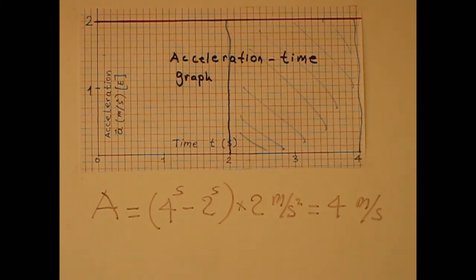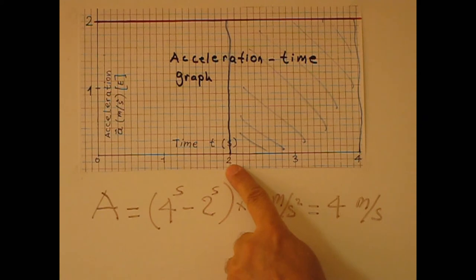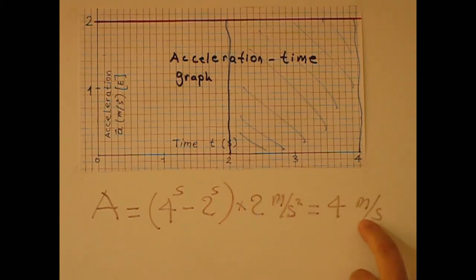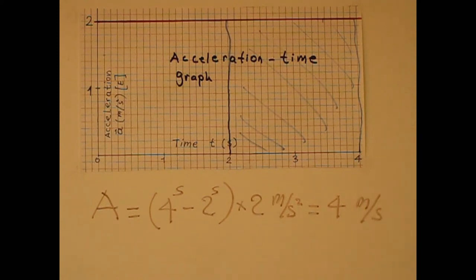So let's say velocity is here ten meters per second. Because the area is positive, four meters per second is added, giving fourteen meters per second.